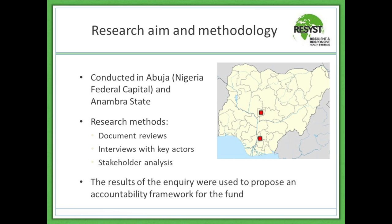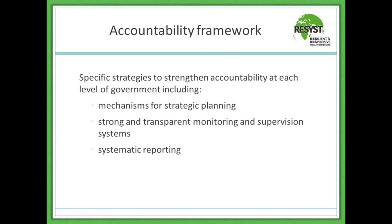We interviewed stakeholders and reviewed documents. The research was conducted in Abuja, the federal capital, as well as Anambra state. Methods included document reviews of national and international documents, interviews with key actors, and stakeholder analysis. We used the results to propose an accountability framework for the implementation of the fund. The framework embodies three key strategies: mechanisms for strategic planning, a strong and transparent monitoring and supervision system, and systematic reporting.